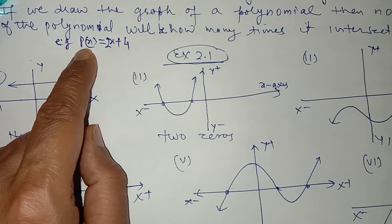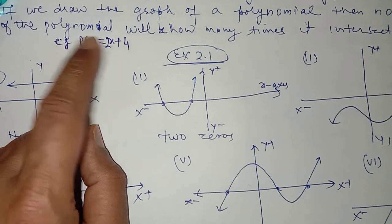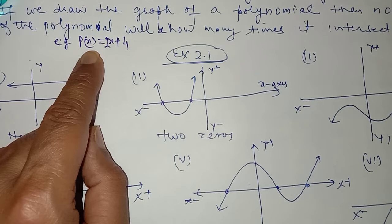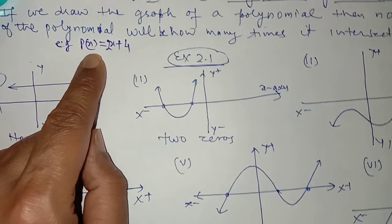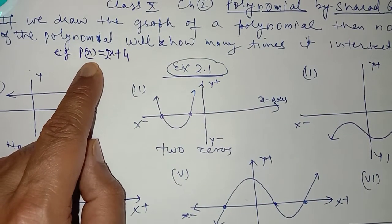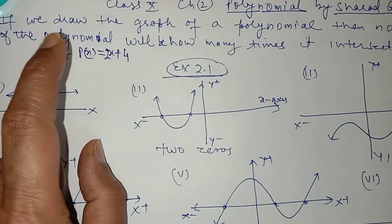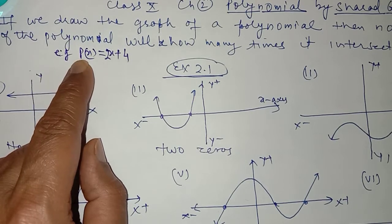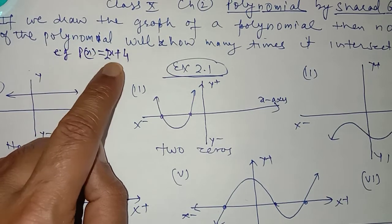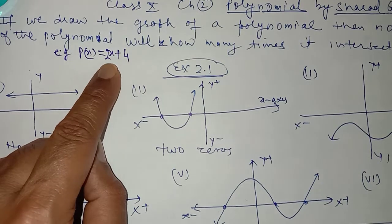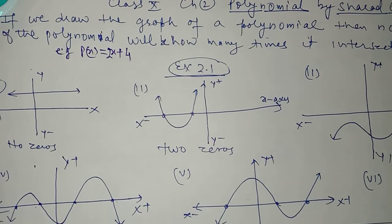p(x) equal to zero means if we let p(x) equal to y, then when you draw the graph of this polynomial, the zero of the polynomial will be the point where y will be equal to zero, or the point where the polynomial meets the x-axis. This is the main important point.